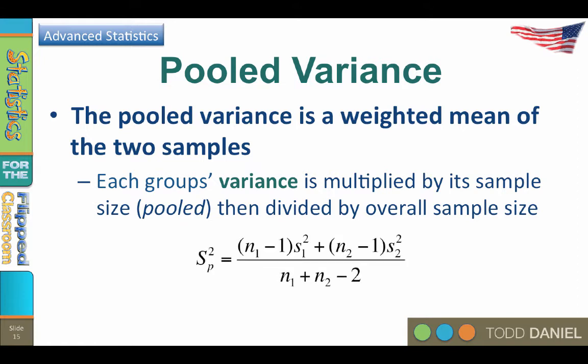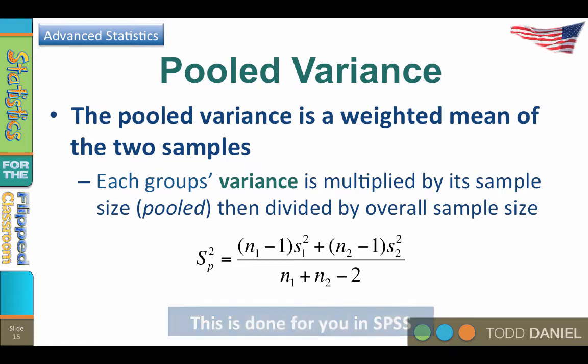Here's what the equation looks like. Notice each sample size, or degrees of freedom n-1, is multiplied by its variance, and then the two are added together, and then both of them are divided by the overall sample size. Of course, if you're using software, this will be done for you without you having to ask, but still it's important to know what's going on behind the scenes.